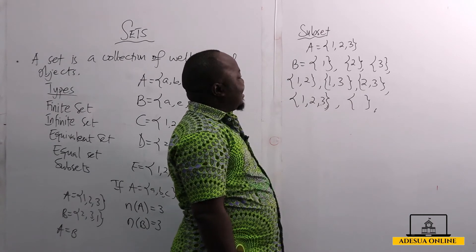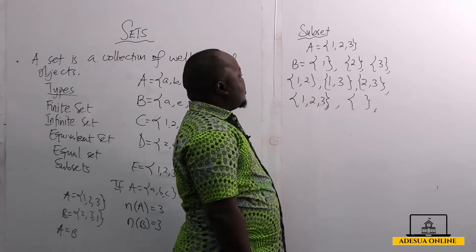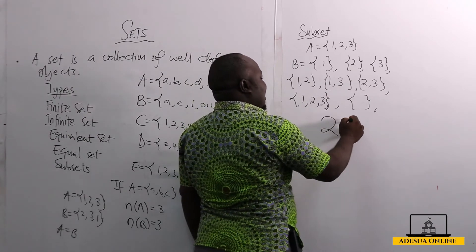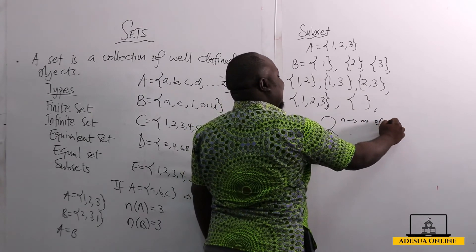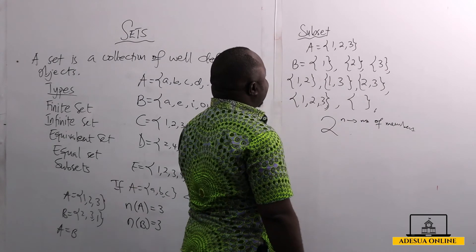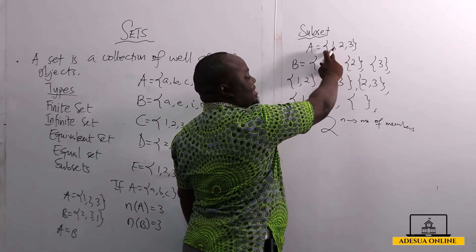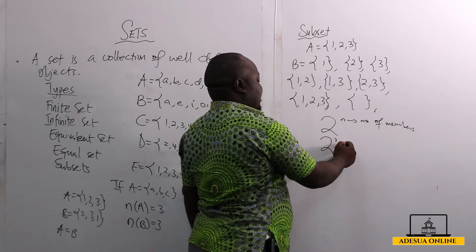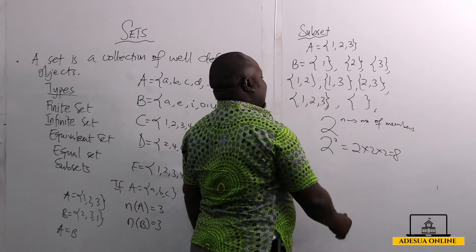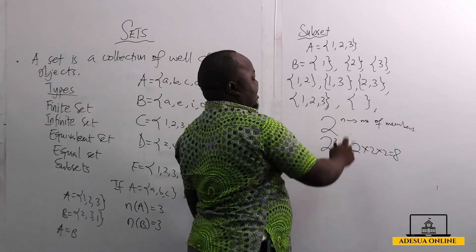So if we want to find the number of subsets in a given set, we can find it by 2 raised to the power n, where n is the number of members or elements in that set. So if A equals 1, 2, 3, the number of elements is 3, and we have 2 to the power 3 equals 2 times 2 times 2, which equals 8. So there are 8 subsets.